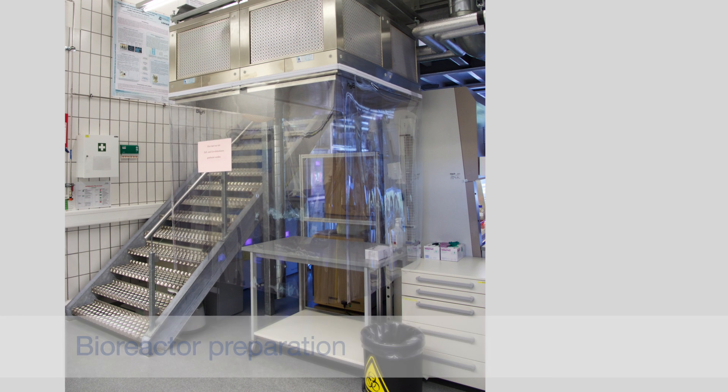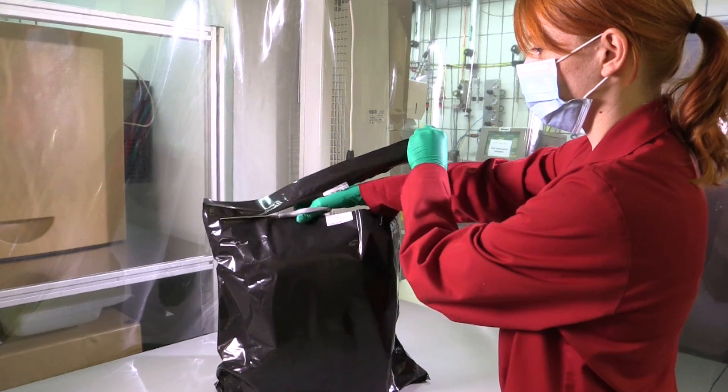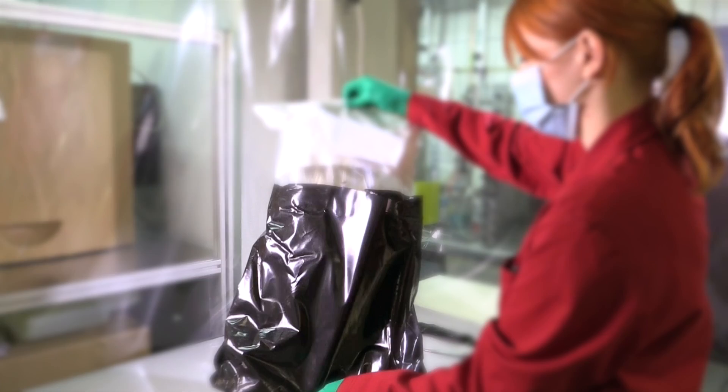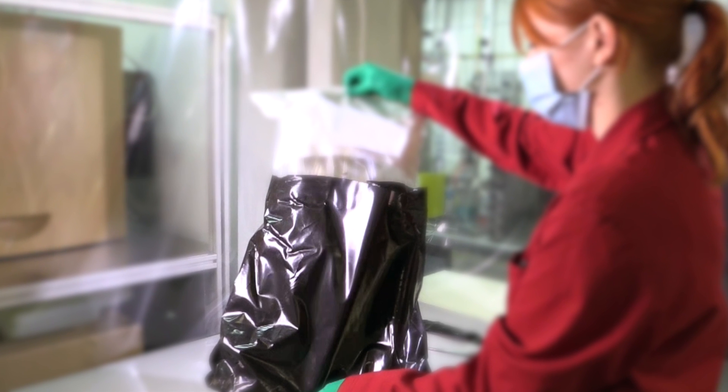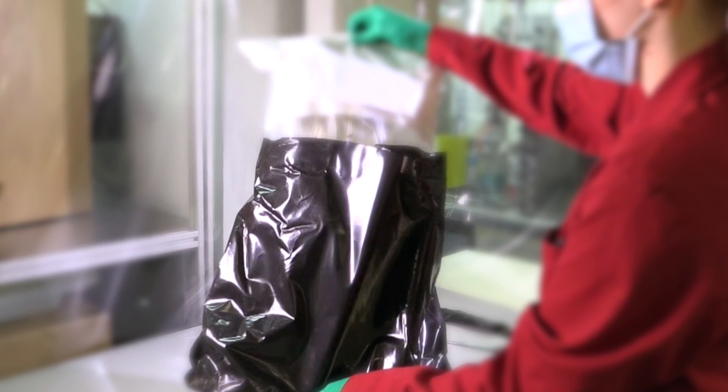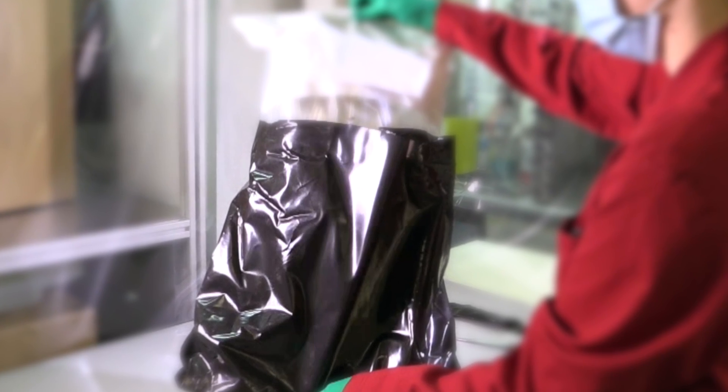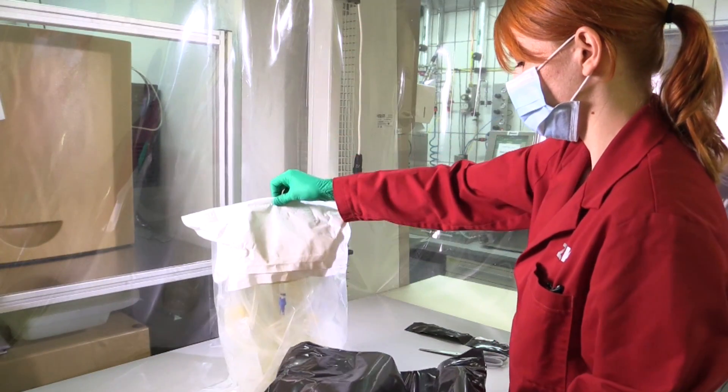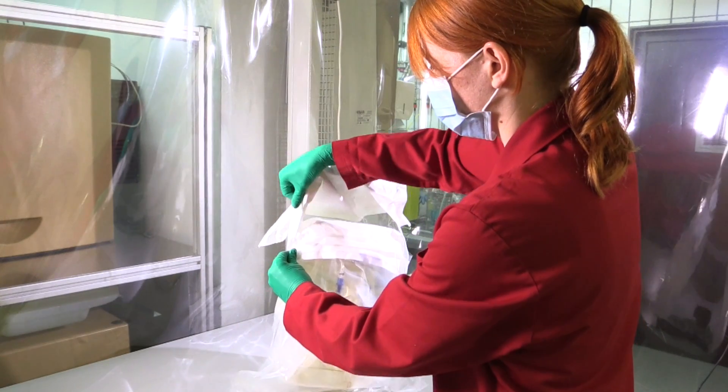Both the bioreactor preparation and the subsequent inoculation take place in a special laminar flow cabinet. The pre-sterilized vessel has three layers of packaging. The first layer is black and protects the vessel from dust and especially from light, which is required to avoid photo bleaching of the optical sensor patches. The second and third layers are transparent and are the sterile part of the packaging.